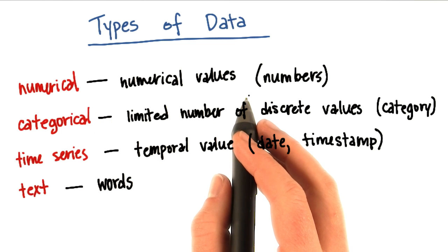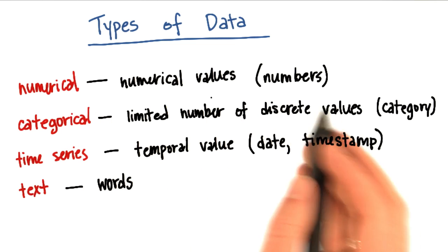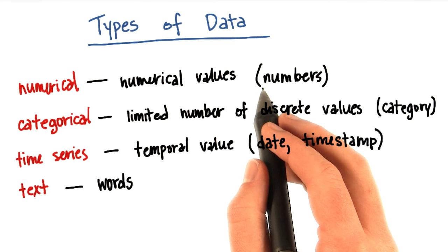One is numerical. So something like salary information would be an example of a numerical variable, where basically the feature is a number.